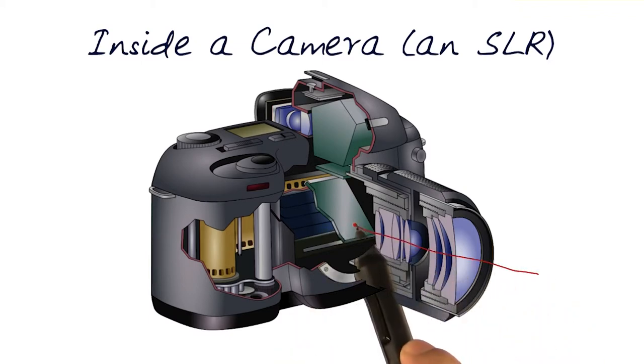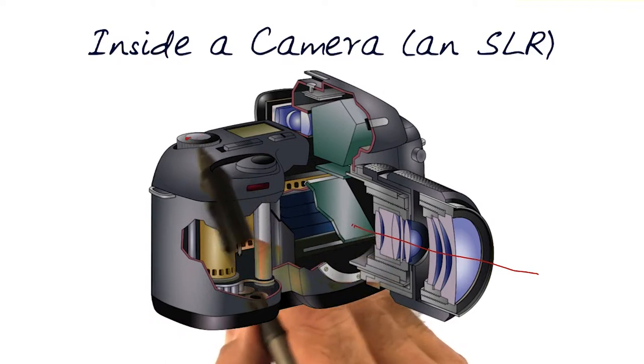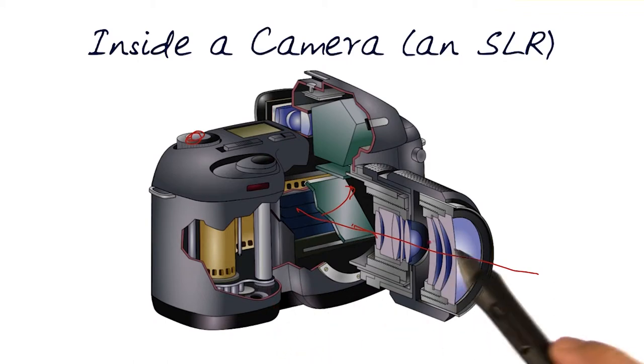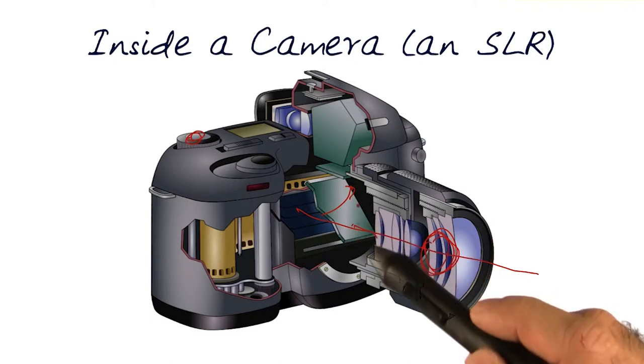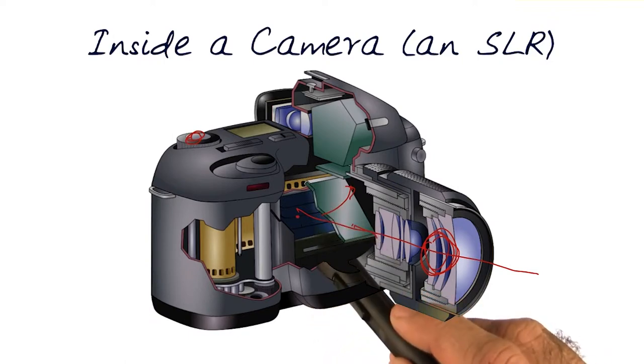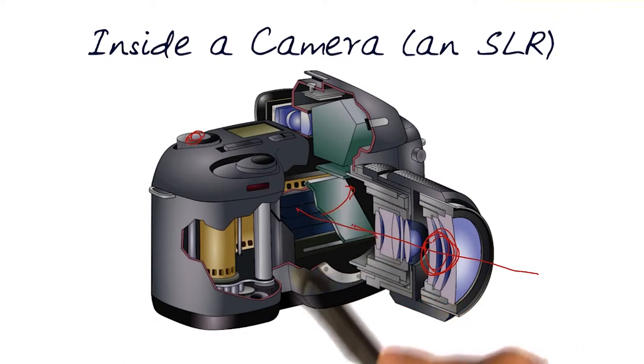So light goes in this way, and the mirror, depending on when I press the shutter, moves up and then hits the sensor. What we now need to figure out is how big the opening would be here, and also how long do we keep this shutter open to get the light in at the appropriate level to get the picture we want.